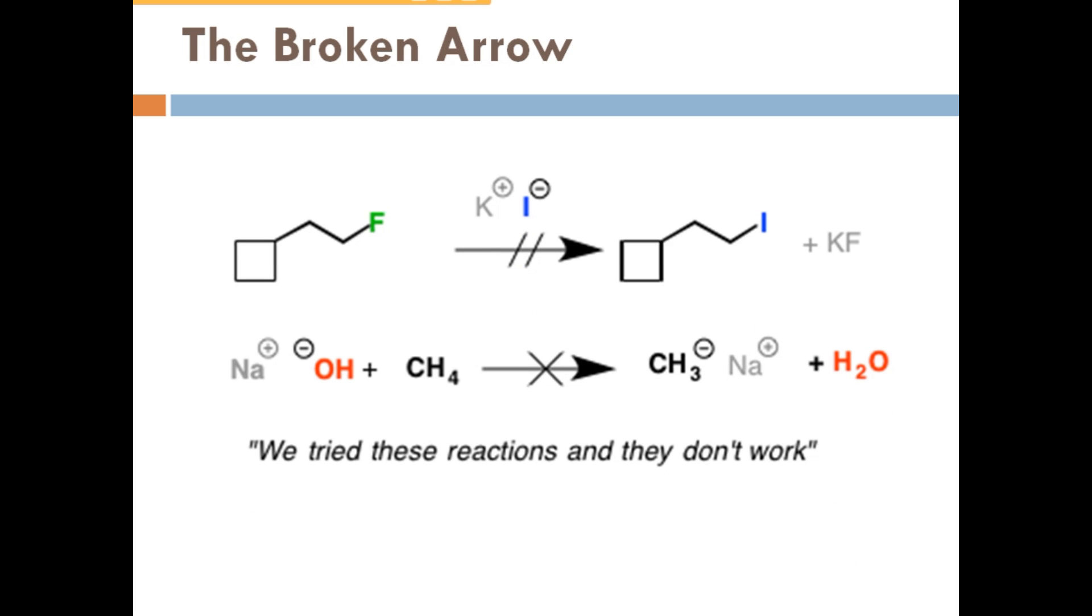The seventh is the broken arrow. This arrow with double line or crossed arrow is known as broken arrow. This means you have tried the reaction, but the reaction was not successful.